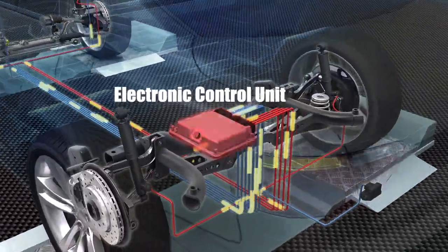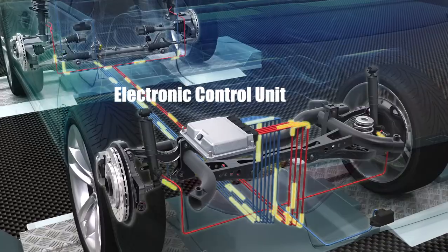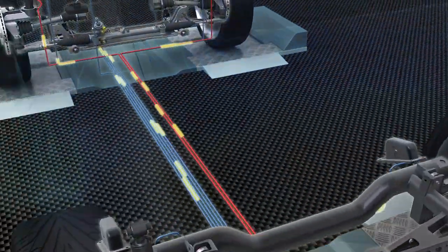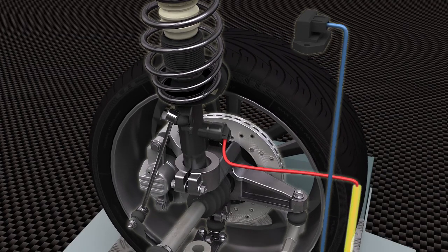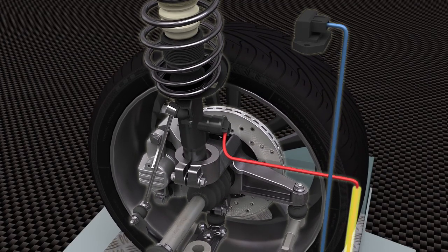These data are analyzed continuously in the system's electronic control unit, which decides the correct force to be applied to each damper. This force can be adjusted independently by means of its electronic valve.